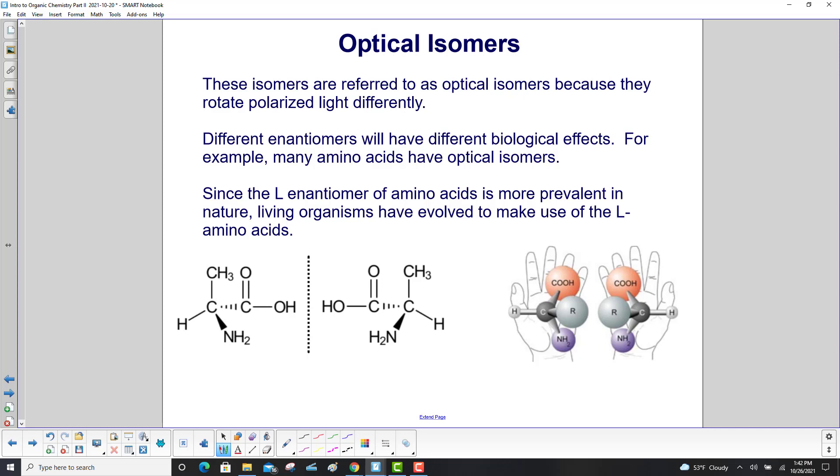For example, many amino acids have optical isomers. Since the L enantiomer of amino acids is more prevalent in nature, living organisms have evolved to make use of the L amino acids.